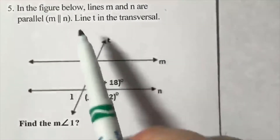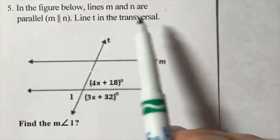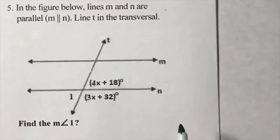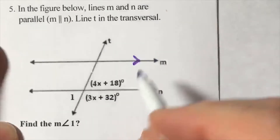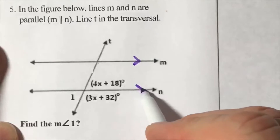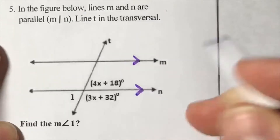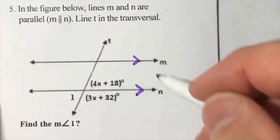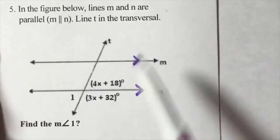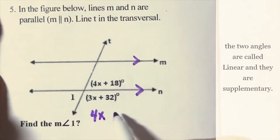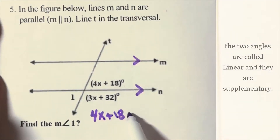In the figure below, lines m and n are parallel and line t is the transversal. We draw an arrow here to remind ourselves these are the parallel lines. The angles are supplementary, so we set up the equation: 4x + 18 plus...